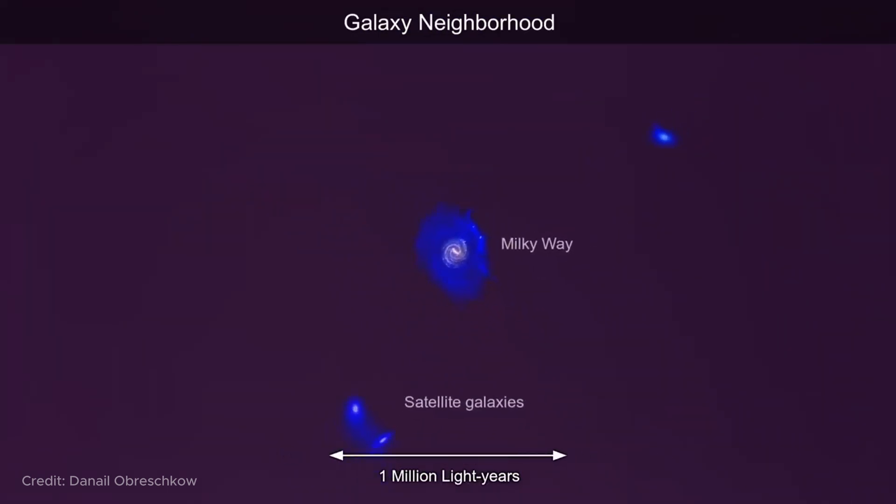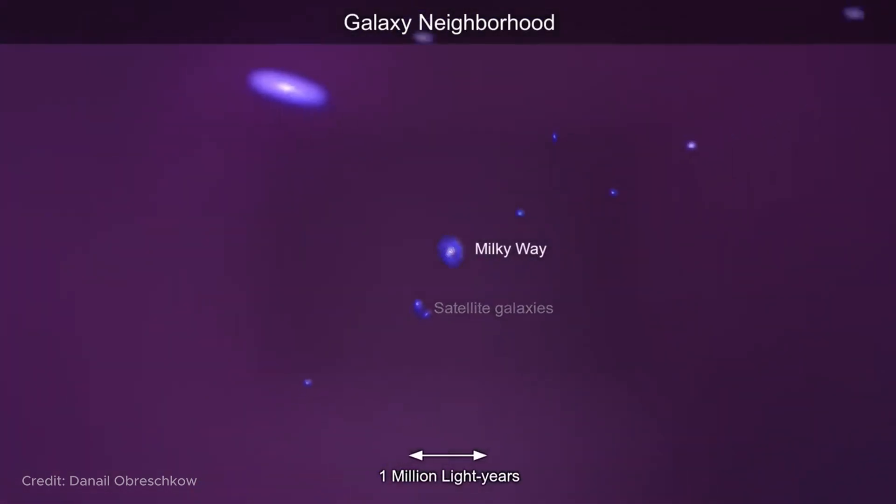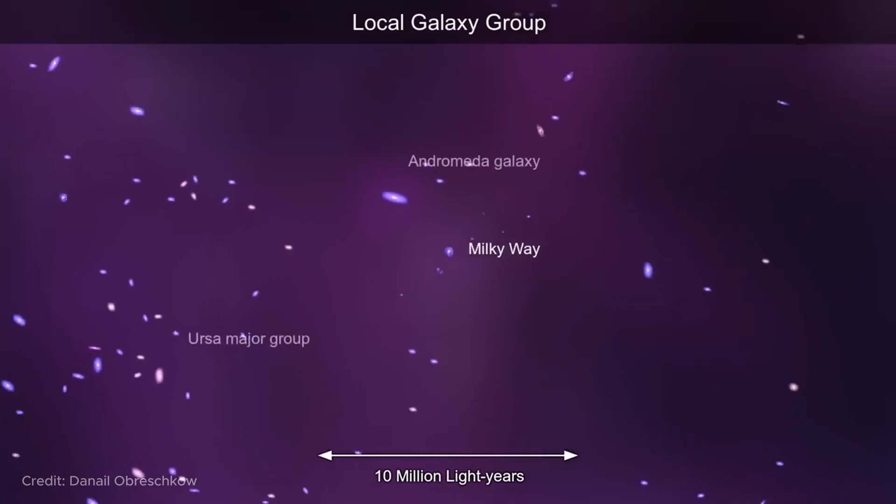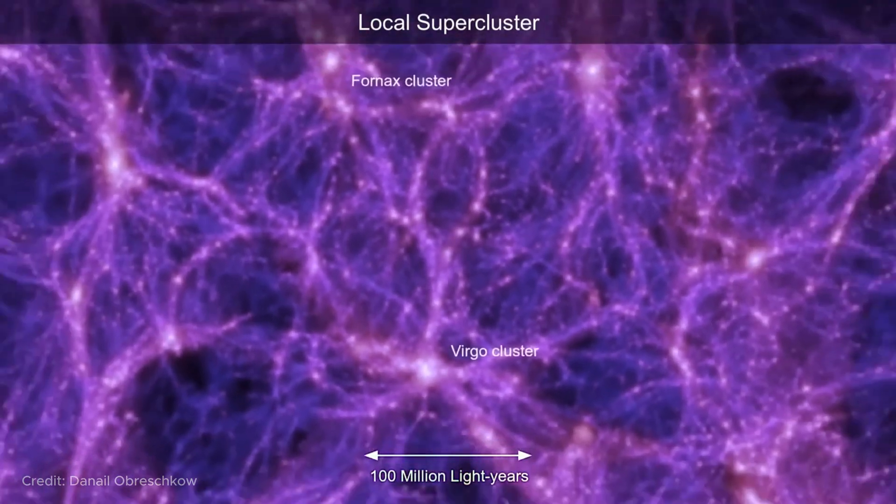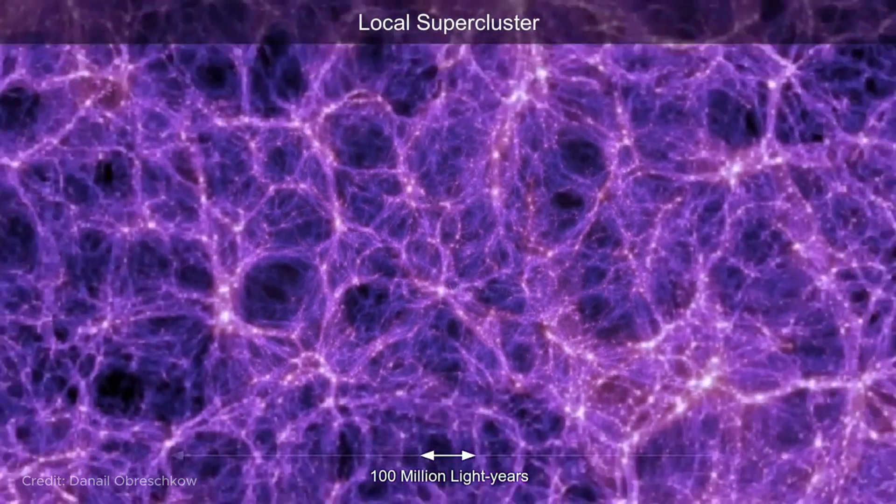If we scale down the universe to the point where entire galaxies with hundreds of billions of stars fit into one pixel, we will see the cosmic web winding from threads, which in turn consists of thousands of galaxies spanning millions of light years.